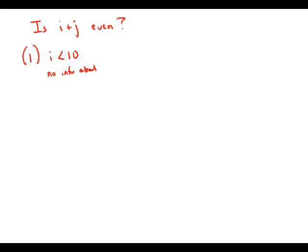If we have no information about j, we have no way of determining anything about what i plus j would be, whether it would be even or odd. So this statement by itself is insufficient.